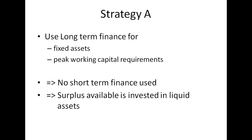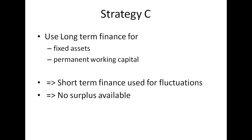Strategy C is at the other end. Here you use long-term finance for fixed assets and the permanent working capital only. The amount borrowed from long-term sources is enough to meet the permanent working capital, so you need short-term finance for the temporary fluctuating requirements. In such a scenario you will not have any surplus funds available at any point. This is the aggressive policy, and most managers may not be very comfortable with it.